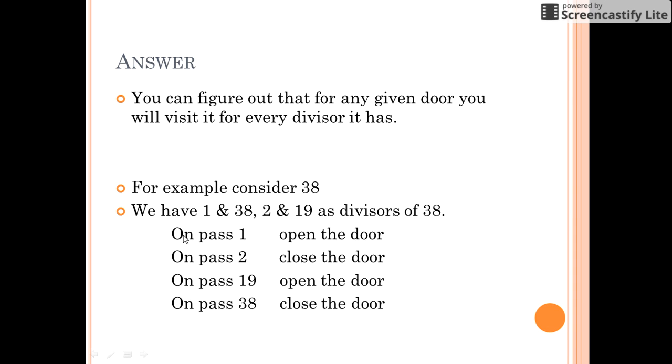When you pass the doors for the first time you will open the door since initially all doors were closed. When you pass the door the second time you will close this door. When you again pass this door on the 19th turn you will open the door again. Similarly, when you pass the door the 38th time you will again close the door. So for door number 38, the status of the door would be closed even after you have passed 100 times.